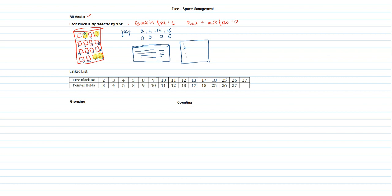Looking at blocks 1 through 16: block 1 is free so bit vector is 1; block 2 is not free so it is 0; block 3 is free — 1; block 4 is not free — 0; block 5 is free — 1. From blocks 6 to 14, all have value 1. Blocks 15 and 16 are not free, so they have value 0.